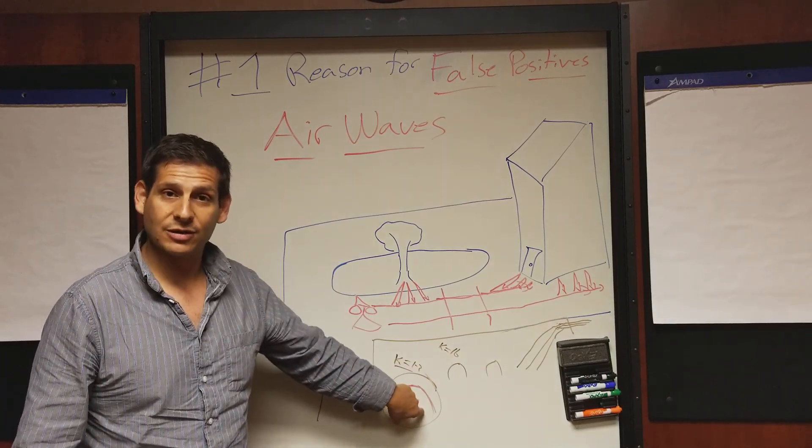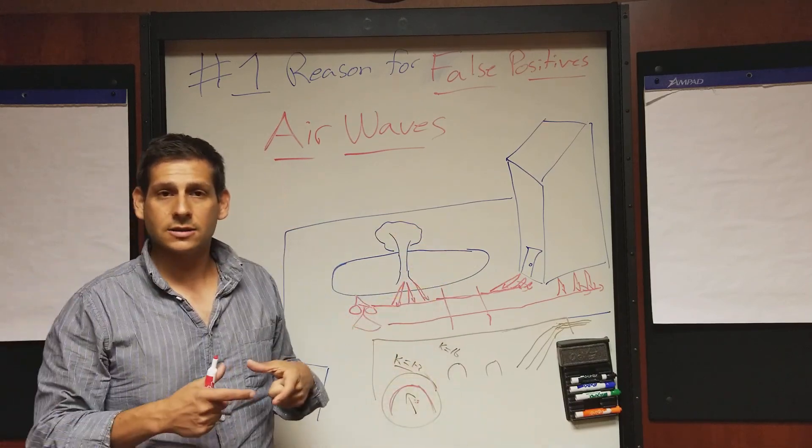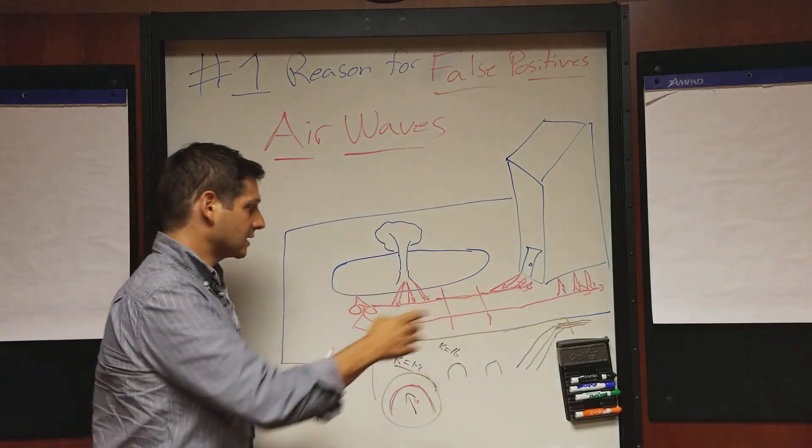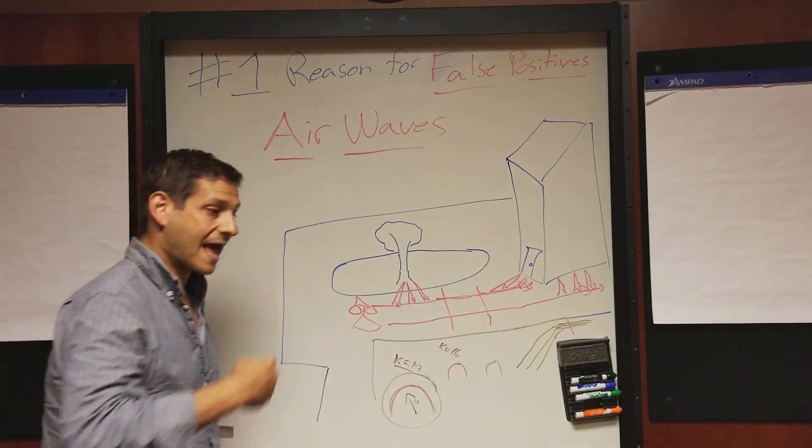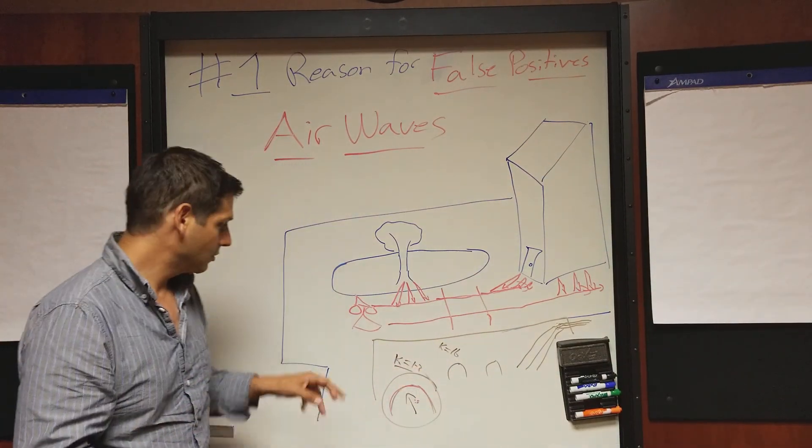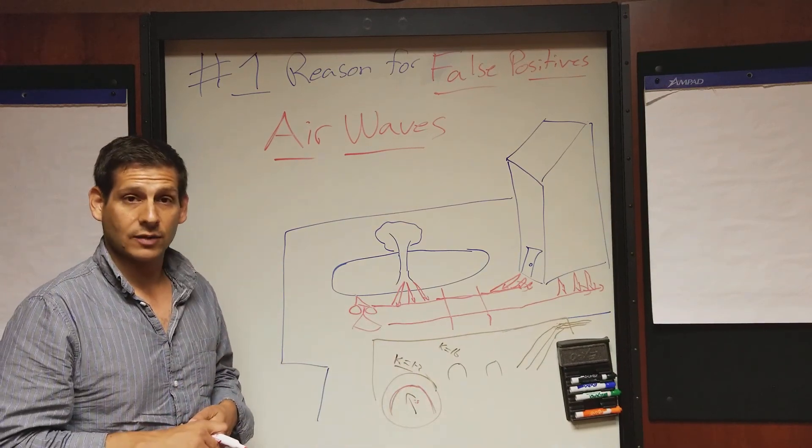But we were going through this and they had something that looked just like this. And they were wondering if it was a buried pipe or not. And what it was, was they were inside a warehouse and there were columns holding up the ceiling. But every time they passed a column, every time they passed a column, it would have a hyperbola. And so what I did was I matched it up and we saw that the dielectric was very low, one to two. And so we knew that it was an air wave.